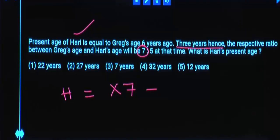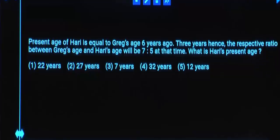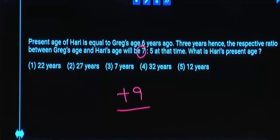7 multiple will be Greg's age after 3 years. To get present age, subtract 3. And then subtract 6 more to get Hari's age — total you need to subtract 9 years. So Hari's present age plus 9 years will equal Greg's age after 3 years, and that should be a 7 multiple.